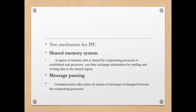In the shared memory model, a region of memory that is shared by cooperating processes is established, and processes can then exchange information by reading and writing data to the shared region. There will be only one shared memory location available, shared between the different processes. Whoever wants to write data will write into that same address location, and whoever wants to read data will read from the same memory address location.